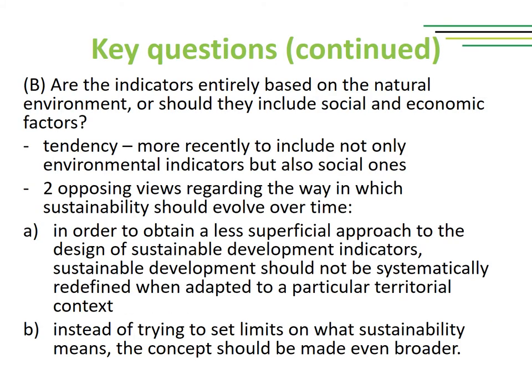A second question has to do with the nature of the indicators. Should they be entirely based on the natural environment or should they include social and economic factors? The tendency, at least more recently, is to include not only environmental indicators but also social ones. However, there are two opposing views in the literature regarding how sustainability should evolve over time. On one hand, some authors argue that sustainable development should not be systematically redefined when adapted to a particular territorial context. The other approach states that instead of trying to set limits on what sustainability means, the concept should be made even broader. These views are not merely theoretical because they impact the way in which a measurement system is built.